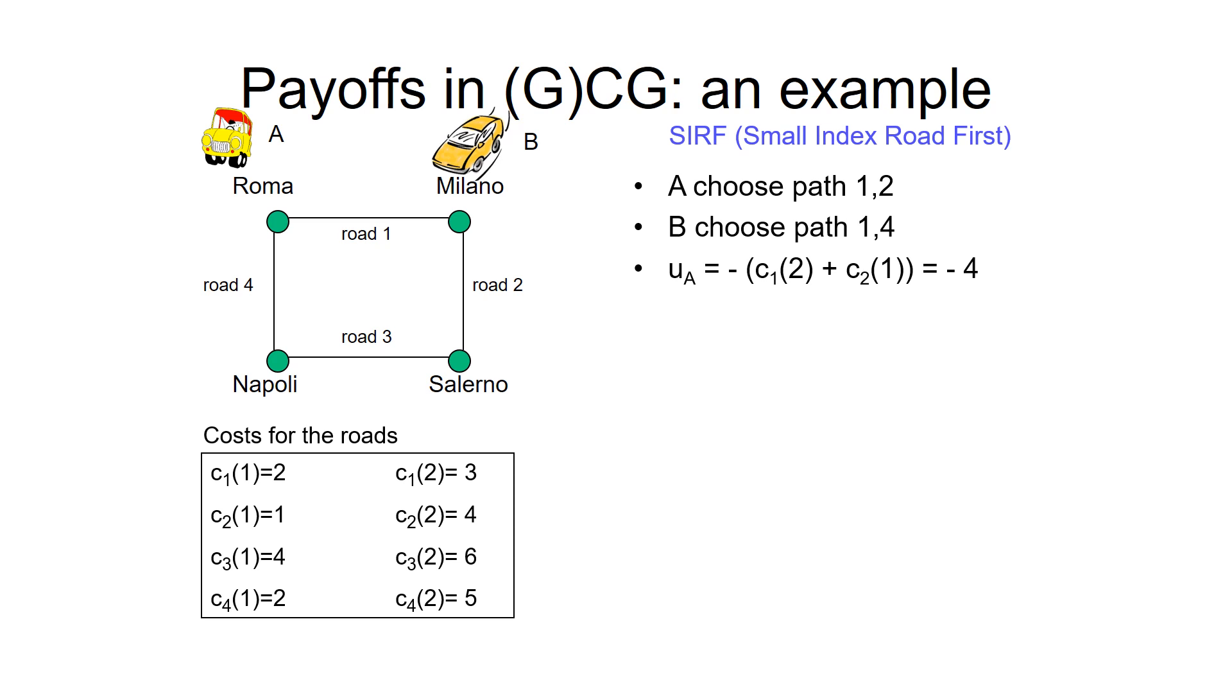U_A: road 1 is shared by two people so c1 of 2 is 3, plus c2 of 1 person is 1, equals 4. And U_B: c1 of 2 is 3, plus c4 of 1 is 2, equals 5.